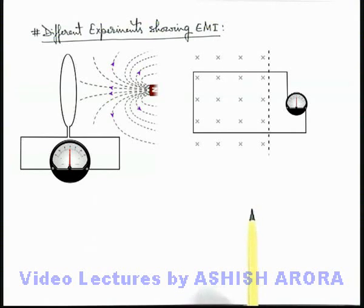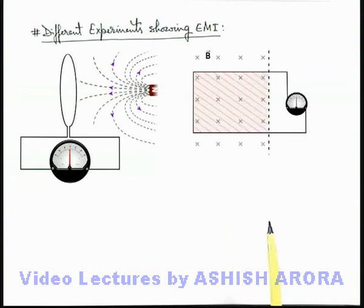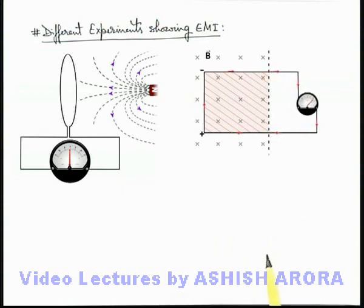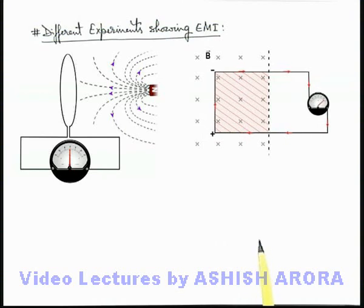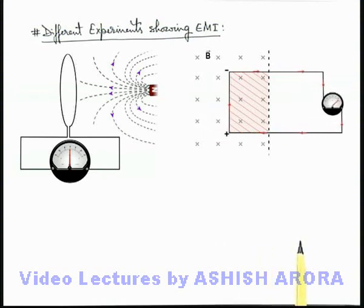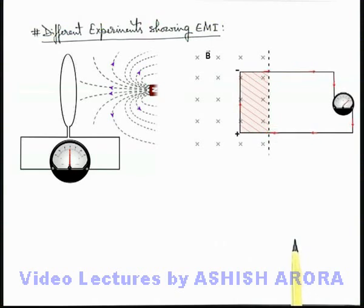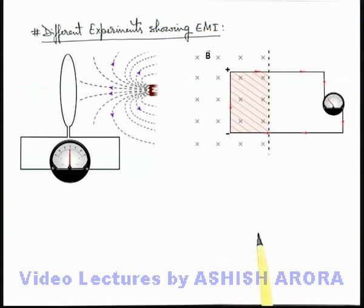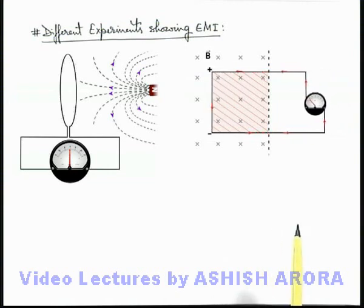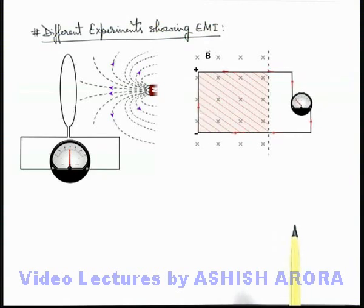Similar to this, here you can see another experiment. There is a uniform magnetic field in which a rectangular loop is placed, and a part of the loop is outside the magnetic field. A galvanometer is connected in the circuit. If the loop is pulled out of the magnetic field, the total flux passing through the loop is decreasing, and we can see a deflection in the galvanometer due to an EMF induced by the change in flux through the loop. Similarly, if the loop is pushed into the magnetic field, the flux increases and the direction of deflection in the galvanometer is opposite, meaning an opposite EMF is induced.